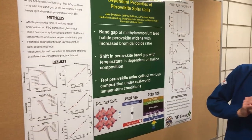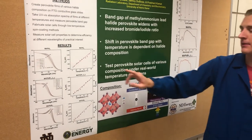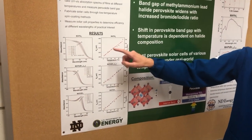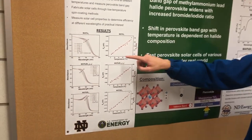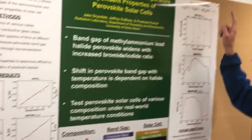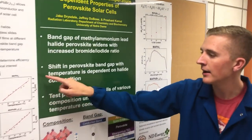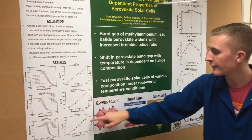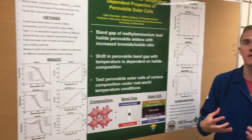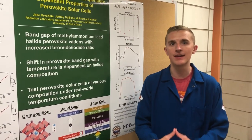With that understood, we measured the perovskite bandgap energy values relative to temperature, and then we used something called the Varshni equation, which is essentially taking a linear fit of each of these data sets. The slope of each of these linear fits corresponds to the rate of change of the bandgap energy with respect to temperature.